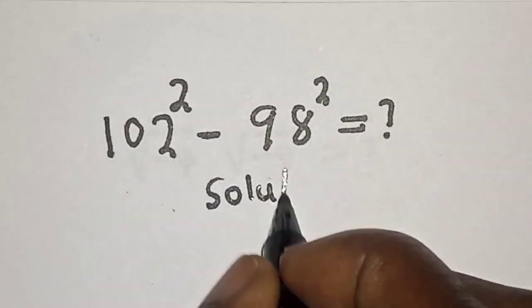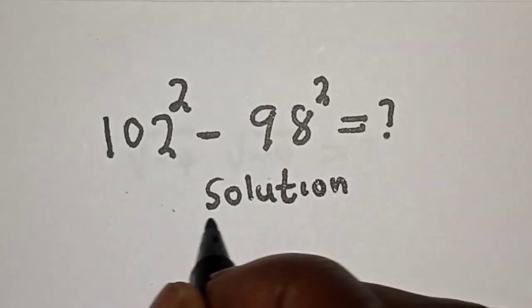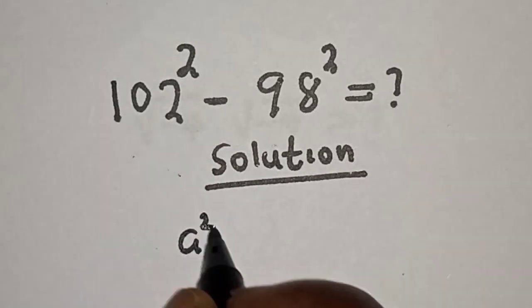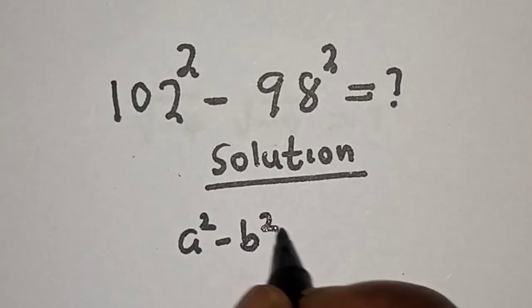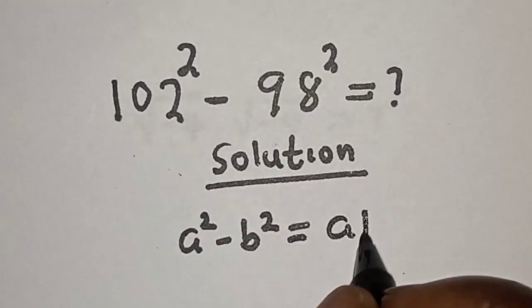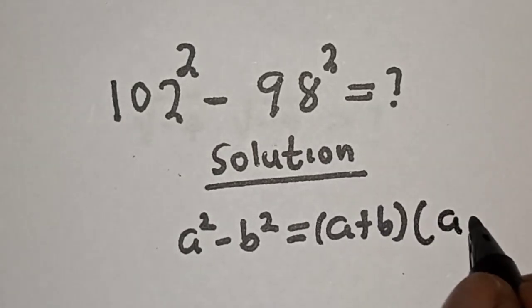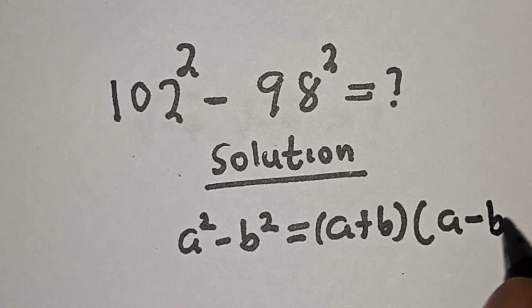Solution: Then take note of this, that a squared minus b squared is equal to a plus b bracket a minus b.